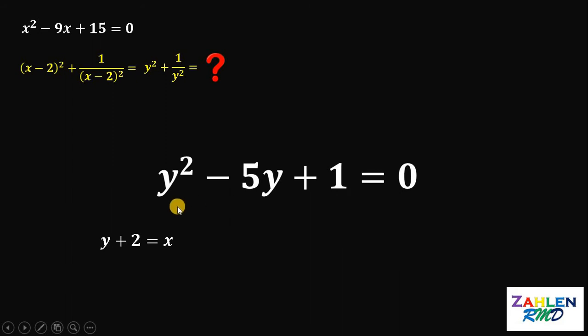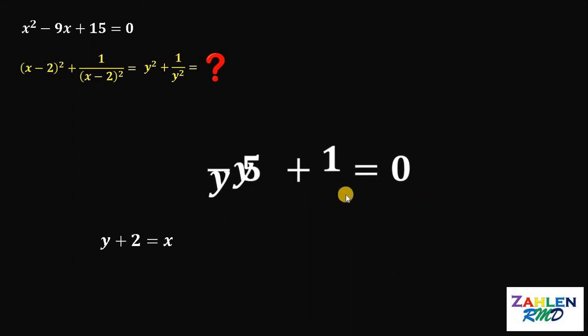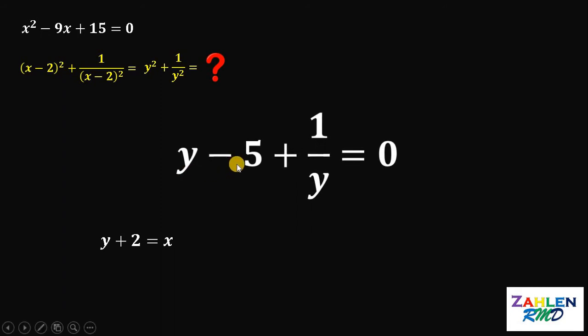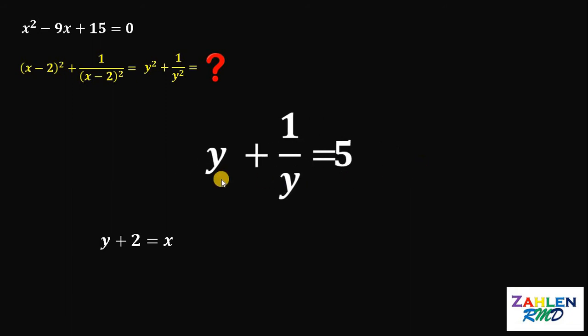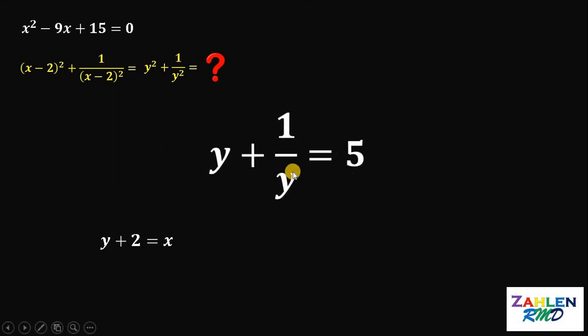At this point, let's divide all terms in this equation by y. If we do that, we get y minus 5 plus 1 over y equals 0. Now add 5 on both sides and we get that y plus 1 over y equals 5.